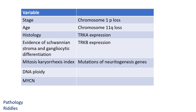Favorable prognostic factors include: initial stages (1, 2A, 2B, 4S); age less than 18 months; evidence of maturation such as Schwannian stroma and gangliocytic differentiation; mitosis-to-karyorrhexis index less than 200 per 5000 cells; and DNA ploidy being hyperdiploid. Unfavorable factors include stages 3 and 4; age more than 18 months; absence of maturation; mitosis-to-karyorrhexis index greater than 200 per 5000 cells; and near-diploid ploidy with segmental chromosomal losses.